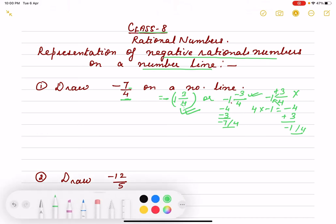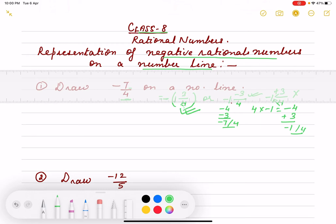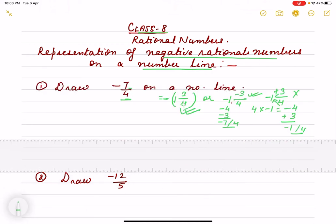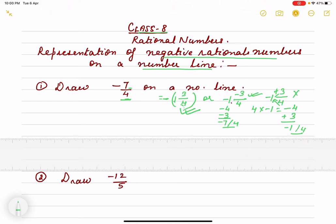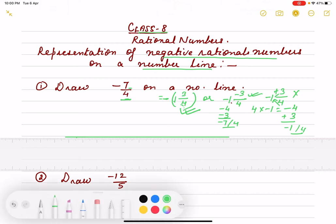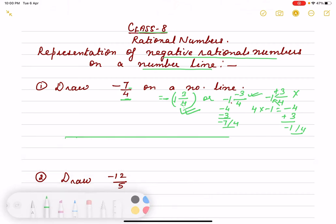Now, how to represent on a number line. First we draw the number line, a straight line with an arrow. We mark 0 at the center. On this side is plus 1, 2. We elaborate the part we have to show.